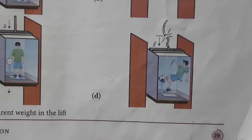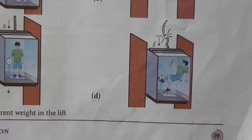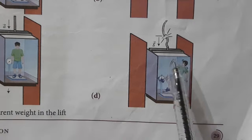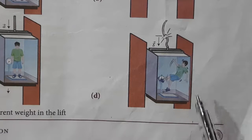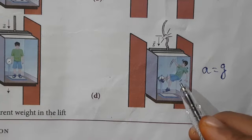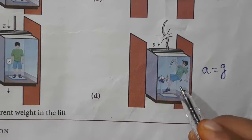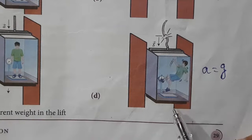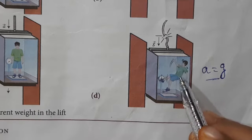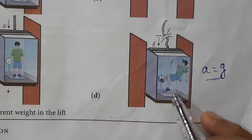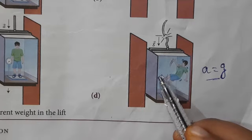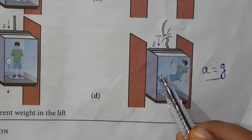We can explain this using the case of a lift. Look at the figure in your book. When the lift wire cuts and the lift falls, the downward acceleration equals g. So the person inside the elevator is in a state of weightlessness — a free fall. The wire cuts, it falls downward with acceleration equal to g, so the person inside the lift is in a flying state, meaning weightlessness.